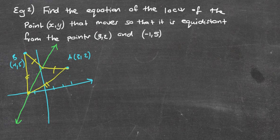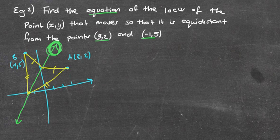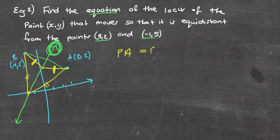The biggest mistake people make is seeing two coordinates and the word 'equation' and just finding the equation of line BA — that's not the case. We're looking for that perpendicular bisector line through the middle of B and A. What we're actually trying to show is that PA equals PB — the distance of PA is always going to be the same as the distance of PB, no matter where I put the point on that line.